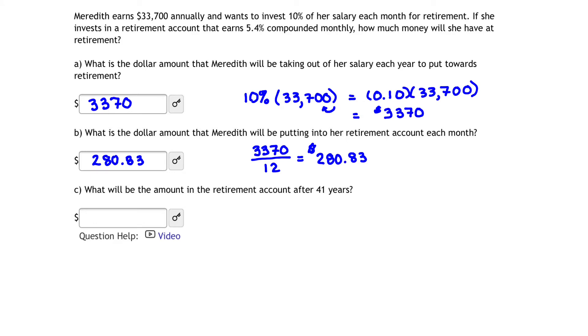That brings us to Part C. What will be the amount in the retirement account after 41 years? Now this is where it gets a little trickier. For this, we actually want to use some of those formulas we've been learning about in our chapter, the finance formulas. Specifically, we want to use the formula for annuity. And that formula is P_N equals D times the quantity of (1 + R/K)^(KN) minus 1, all divided by R/K.